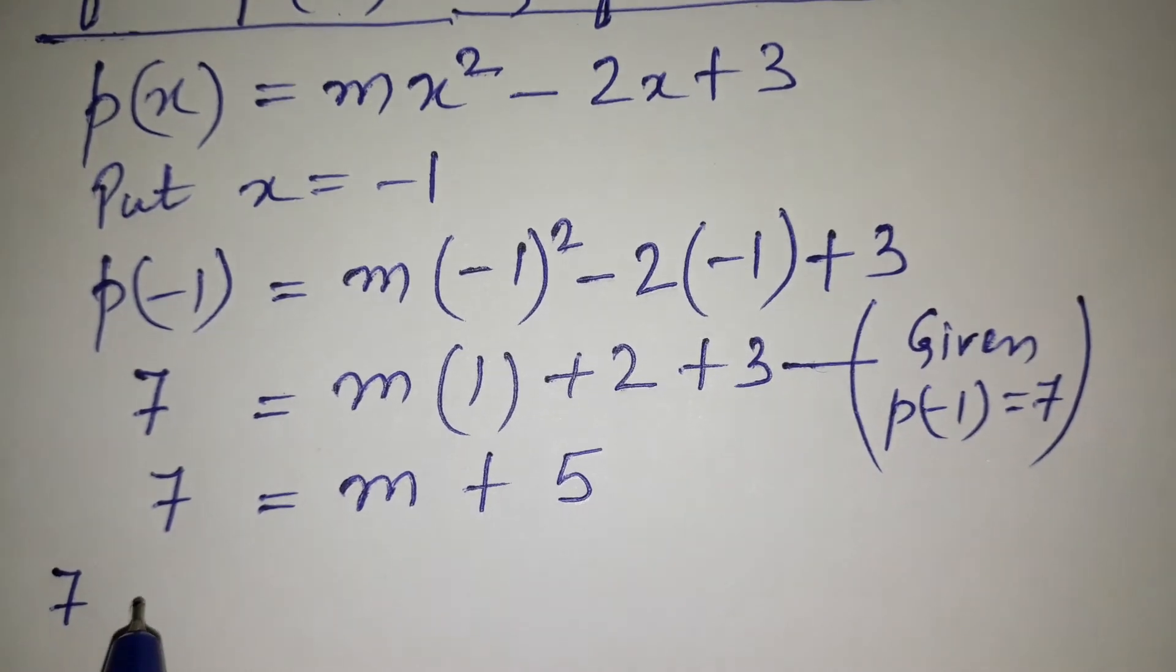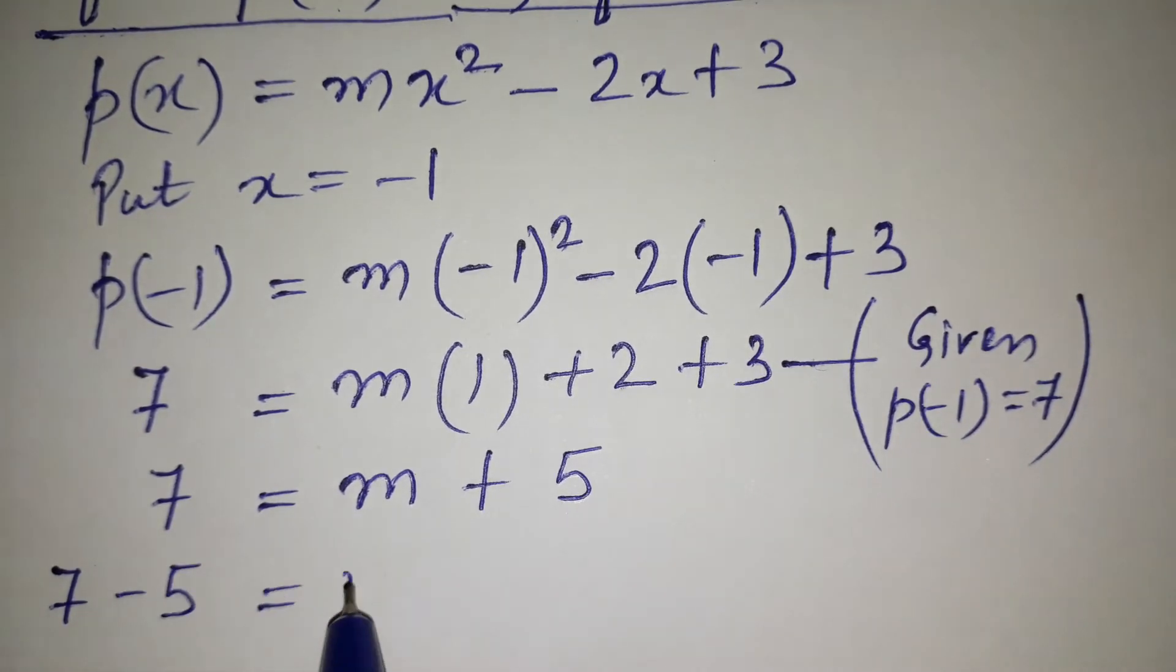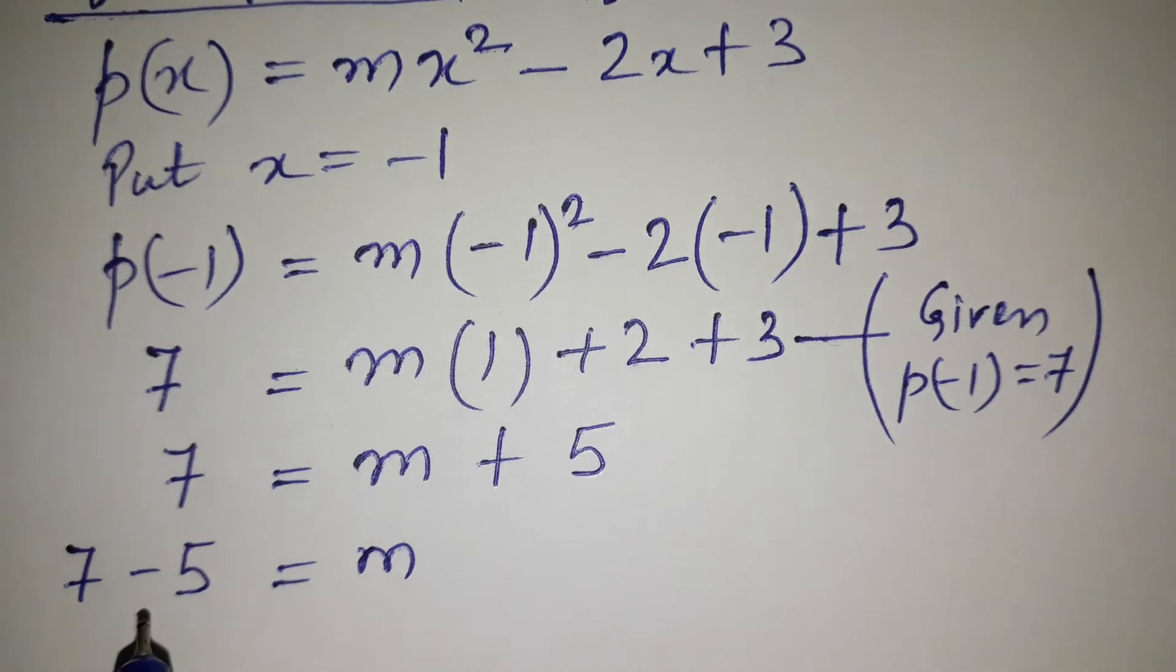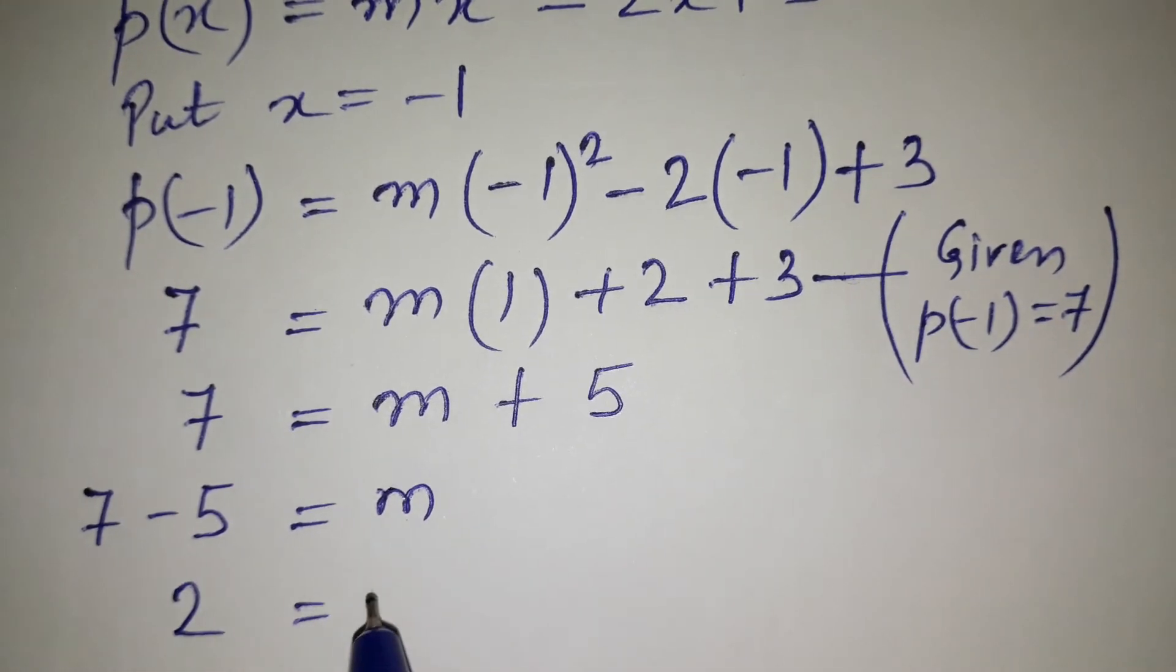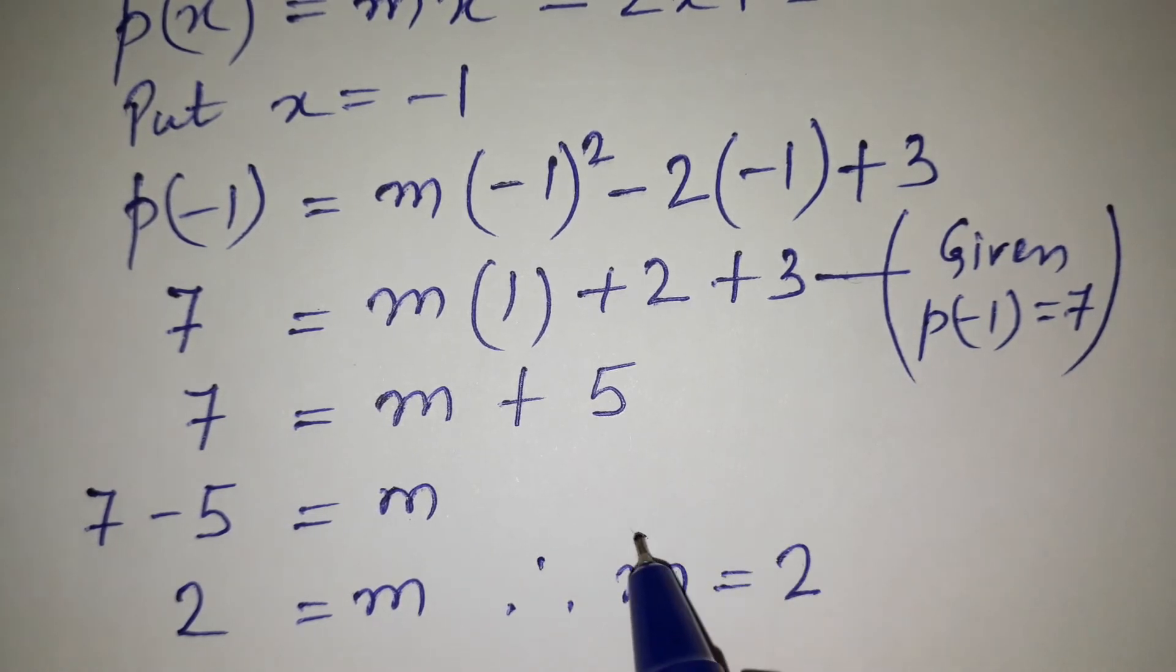So 7 - 5 = m. 7 - 5 equals 2, so we got the value of m = 2. Therefore m = 2.